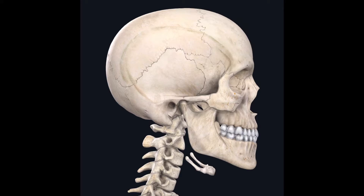The first landmark that we're going to learn is called the calvaria. The calvaria is considered the roof of the skull and is often removed during dissection to expose the brain.